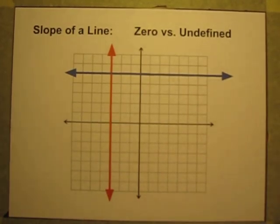In this video I'd like to show you the difference between lines on graphs that have a slope of zero and a slope of undefined, and I'd like to show you what that means.